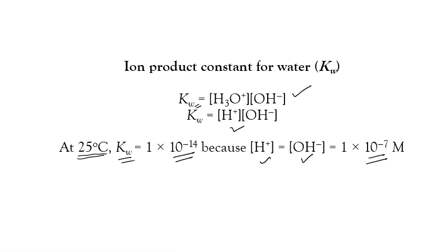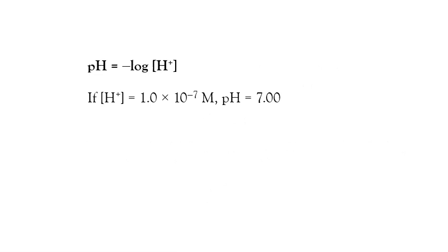Kw is 10 to the power of negative 14 — that is the first key fact for our calculations. The formula to calculate pH is: pH equals negative log of hydrogen ion concentration. For example, in the auto-ionization of water, hydrogen ion concentration is 1 × 10⁻⁷, which I can write simply as 10⁻⁷.